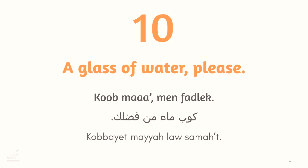Phrase ten: كوب ماء من فضلك — 'a glass of water please.' كوب is a glass and ماء is water. In Egyptian Arabic we say كوباية instead of كوب, and لو سمحت can be used as a synonym for من فضلك — both are valid, even in Modern Standard Arabic. So: كوباية ماء لو سمحت.